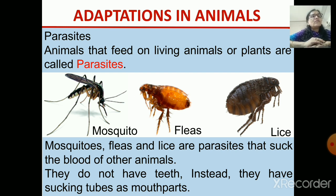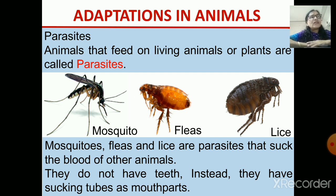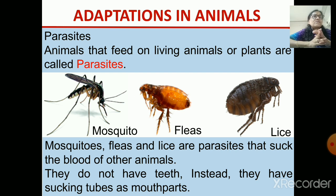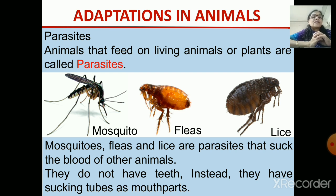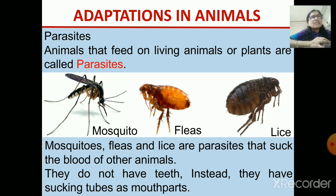They suck the blood, and the examples are mosquitoes, fleas, and lice. When a mosquito sits on you and bites you, it takes your blood. Similarly, fleas and lice are found on the hair of the head — sometimes if you don't keep your hair clean, this lice happens. They live there and suck your blood. They do not have teeth but have got sucking tubes — their mouth parts are in the form of sucking tubes by which they suck the blood. These are known as parasites.